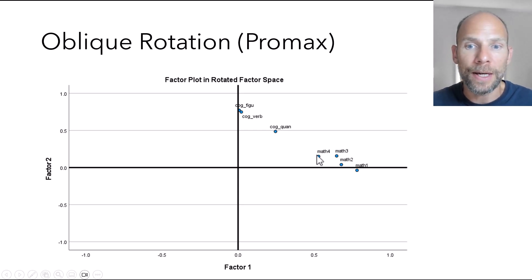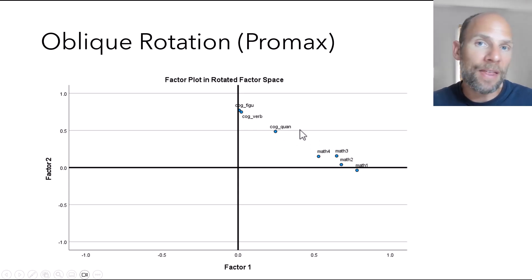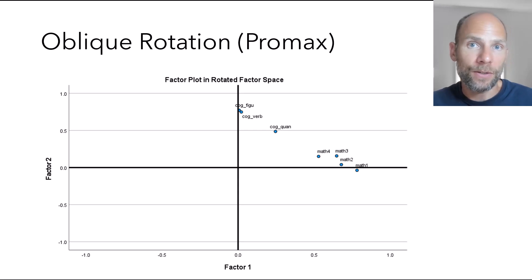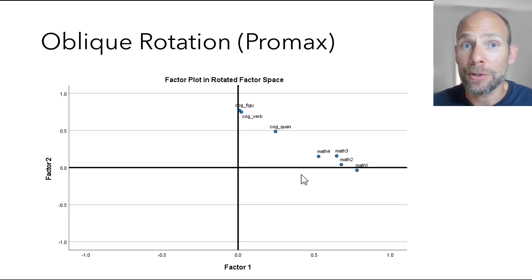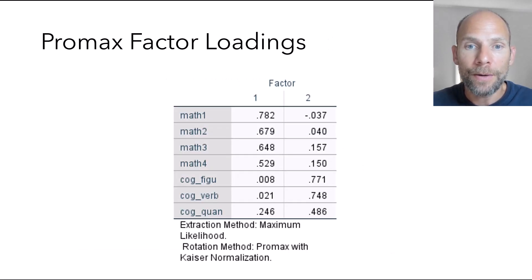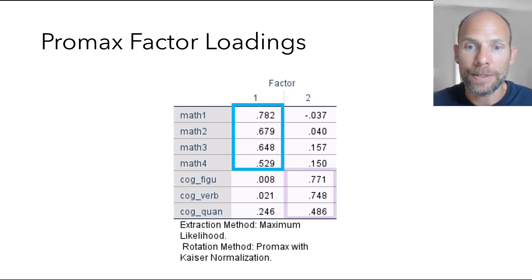You can see now the math variables are much more clearly grouped on factor one, whereas the cognitive ability variables are much more clearly grouped on factor two, with the exception of the quantitative subscale of that test. That makes sense — that subscale is a little closer to the math factor because it also uses numerical or mathematical material, like the math variables. Therefore it makes sense that this variable has a somewhat larger cross loading on the math factor, whereas the other cognitive ability variables really shouldn't have that. This is a much better plot that makes it clearer what those variables are measures of.